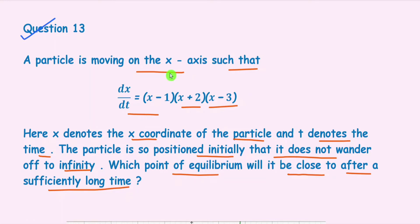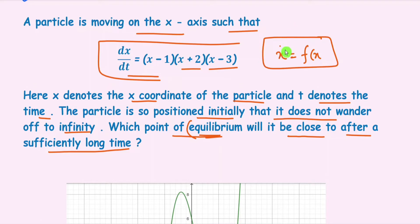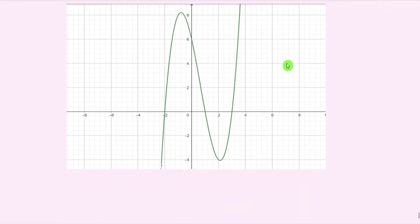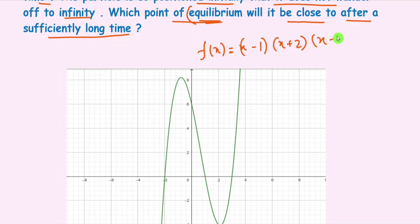So for the solution, we need to find the equilibrium point — that means the fixed point of this system. Suppose this is of the form x-dot = f(x), where x-dot stands for dx/dt. So f(x) = (x−1)(x+2)(x−3). This is the function, and we consider the graph of this function.